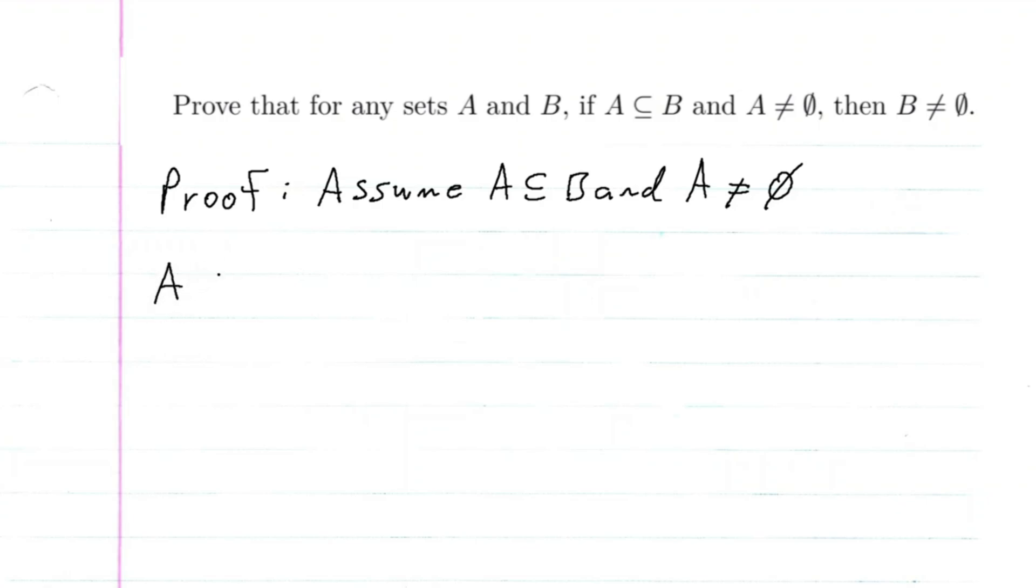So if we have A as a subset of B, then by definition, we know that for every X, if X is in A, this implies that X is in B.